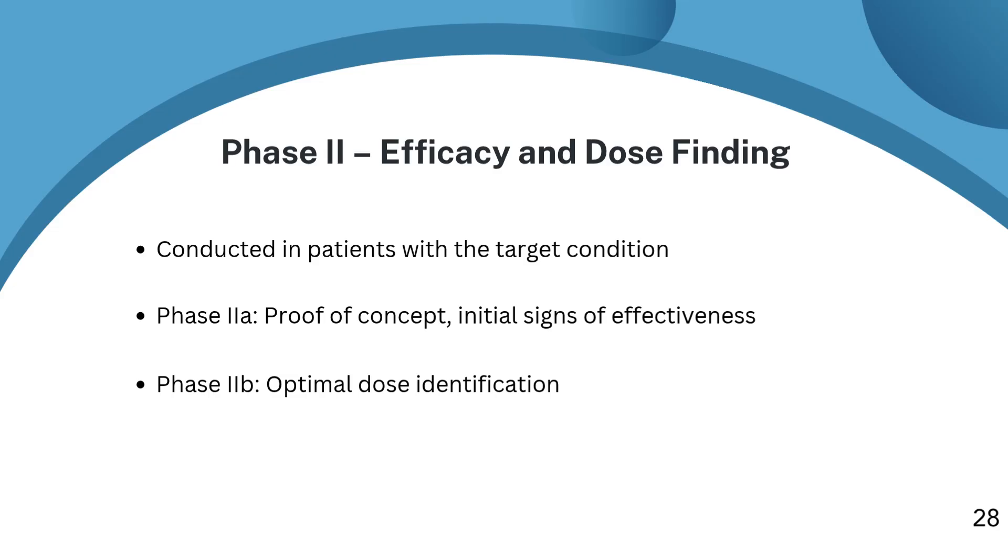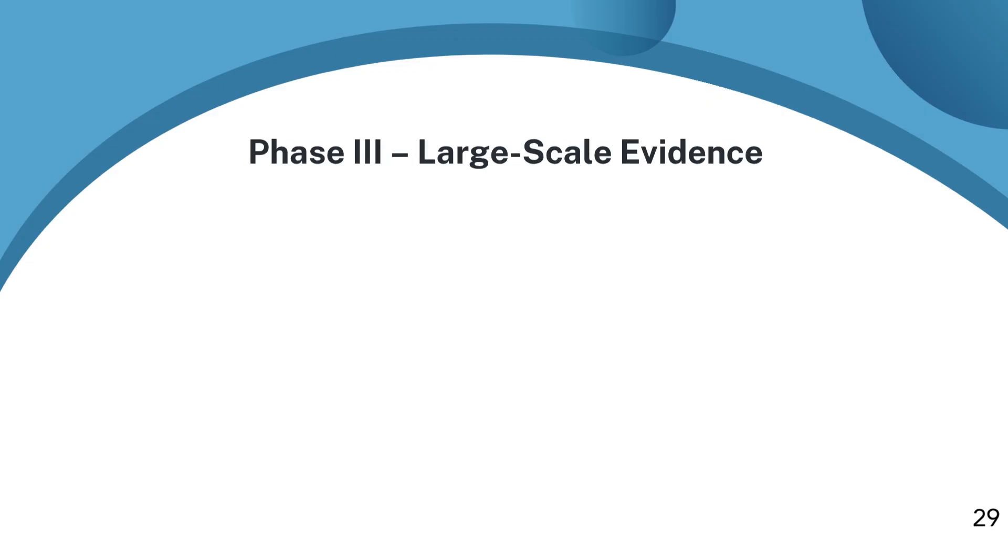Then comes phase 2B. This is about finding the right dose. What's the optimal amount that gives us good results without unacceptable side effects? This phase usually involves a few hundred patients and helps determine the best design for the next big step. Many promising drugs never make it past phase two. It's a tough stage because this is where the real world complexity of the disease and patient diversity begins to show.